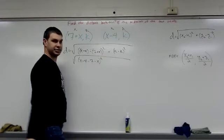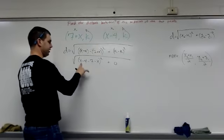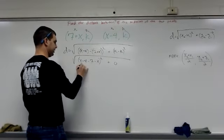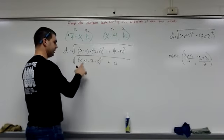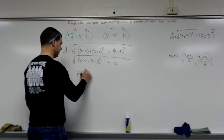Over here, k minus k is just 0, 0 squared, it's still 0, so I can put plus 0 for now, that'll go away. x minus x, if I combine those like terms, those cancel. Negative 4 minus 7 is negative 11, and that's quantity squared, right?